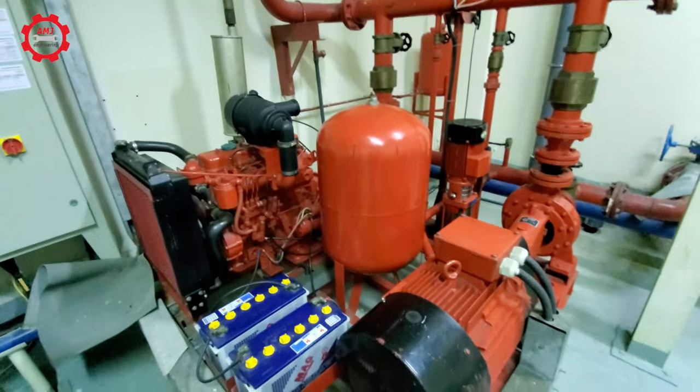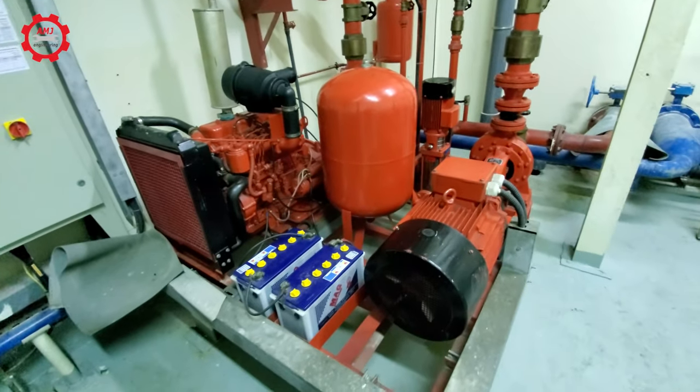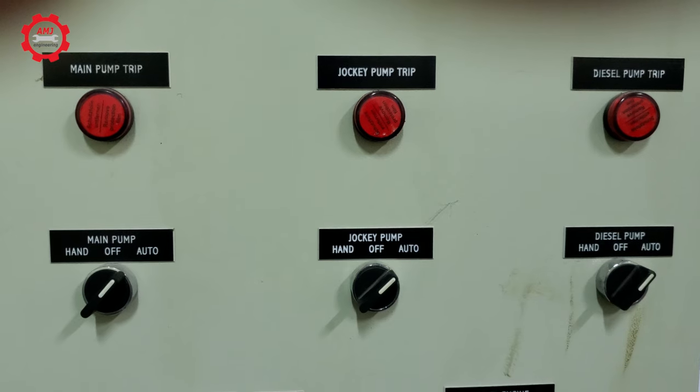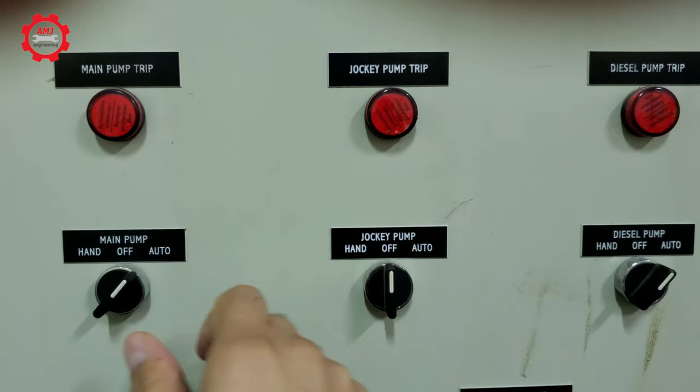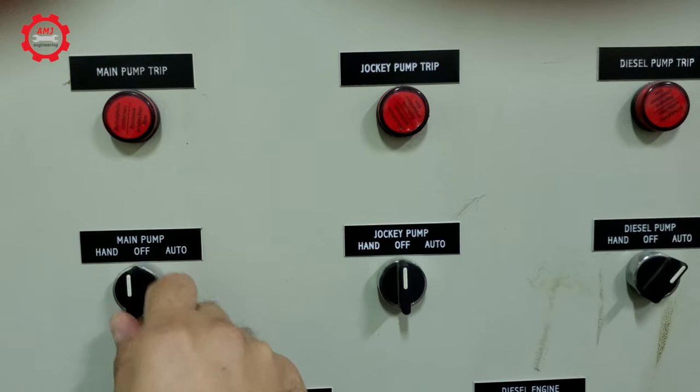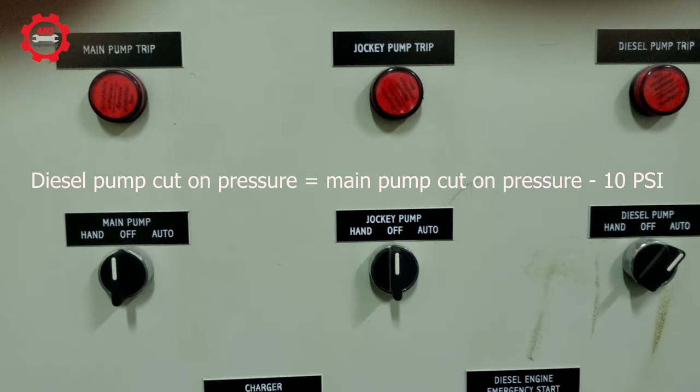In order to test the diesel pump, the same step should be performed. The jockey and the main pump controllers both should be placed on off position. Note that the diesel pump should start automatically at 10 psi less than the main pump cut on pressure, and it should be stopped manually.